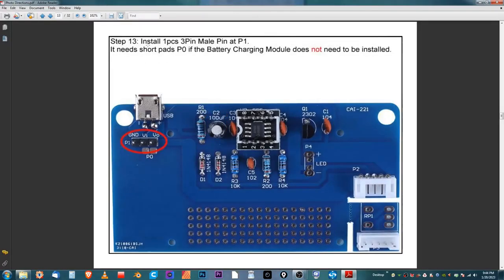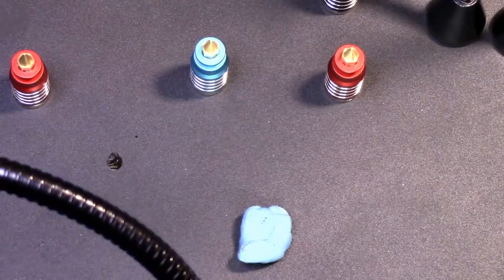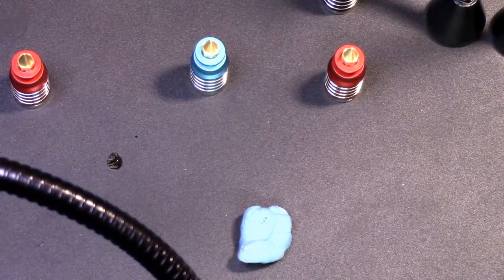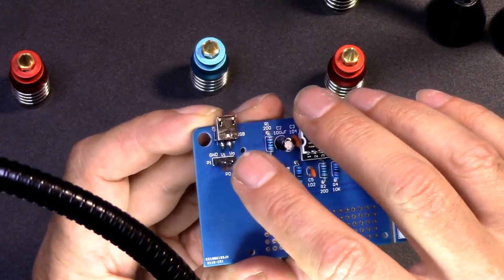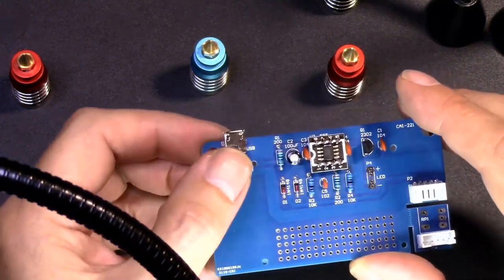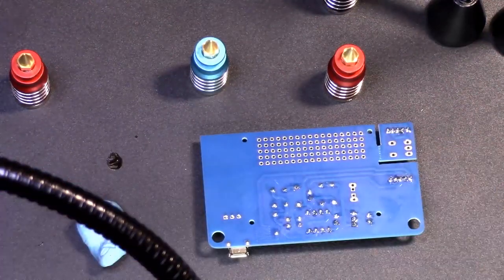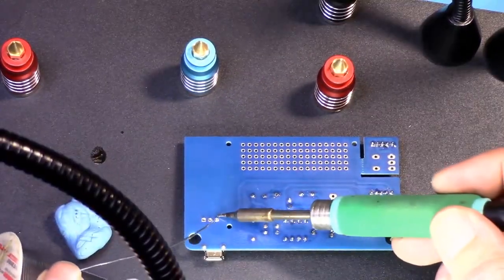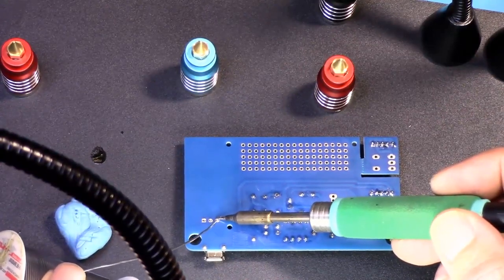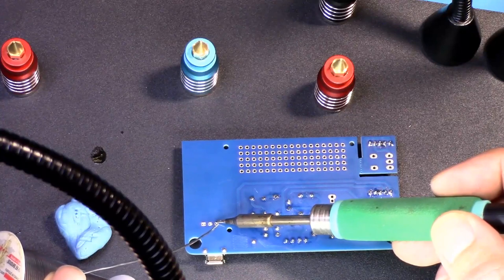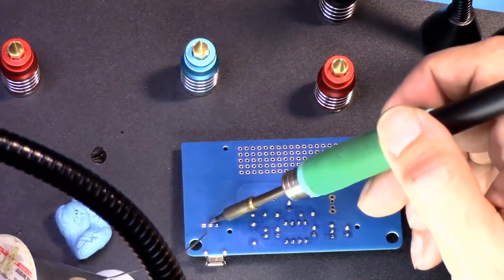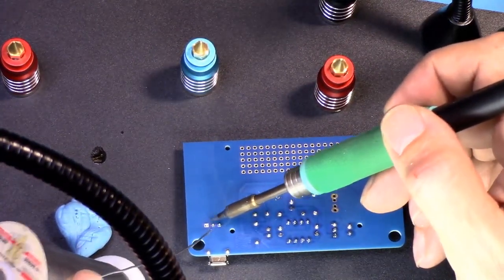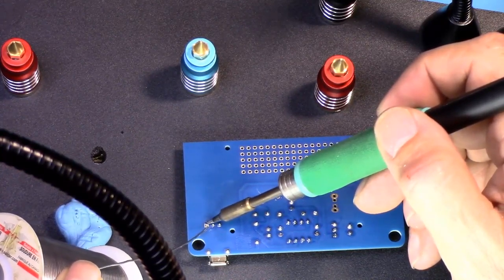Step 13: install one piece three pin male pin at P1. That three pin goes into P1. Then we will turn it upside down and solder that.